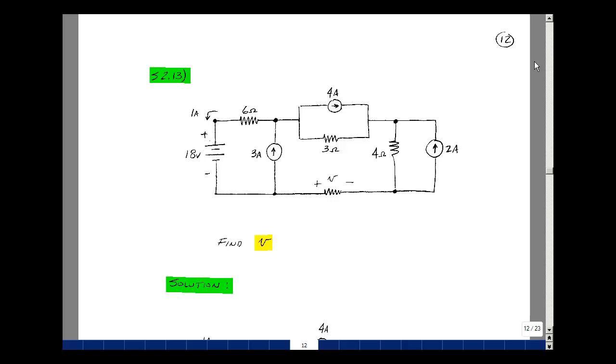This lesson deals with supplemental problem 213. You can find this problem in the ECE 201 ebook in the Chapter 2 Supplemental Problems on page 12. Given the following circuit where you know some of the voltages and some of the currents, can you solve for the voltage V?